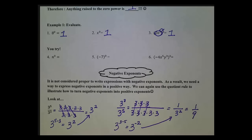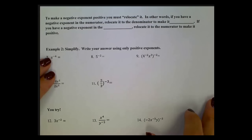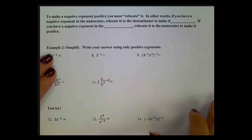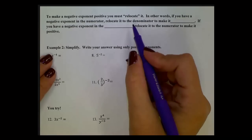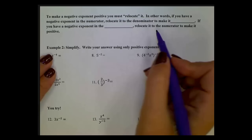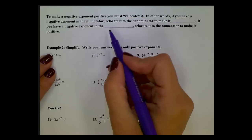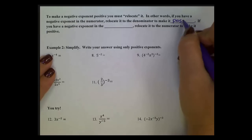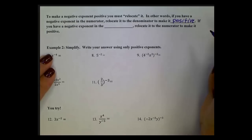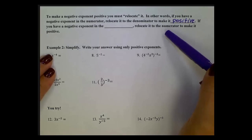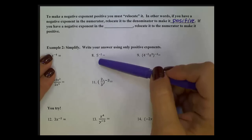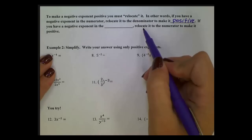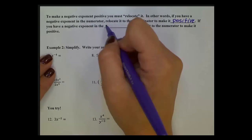To make a negative exponent positive, you must relocate it. If you have a negative exponent in the numerator, relocate it to the denominator to make it positive. If you have a negative exponent in the denominator, relocate it to the numerator to make it positive.